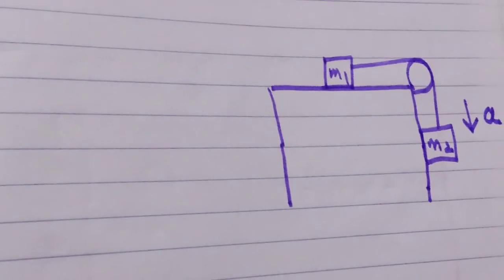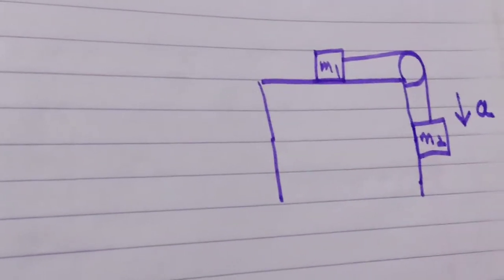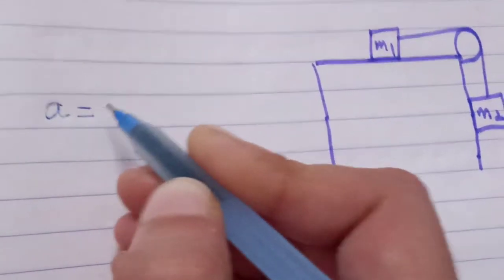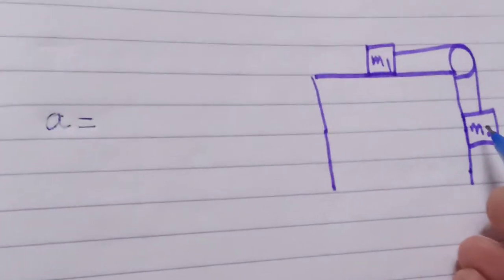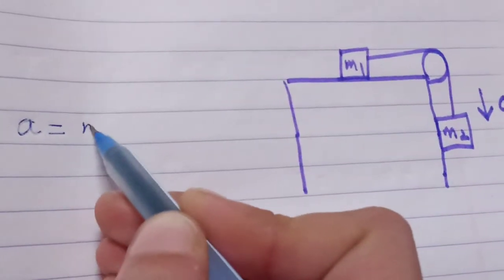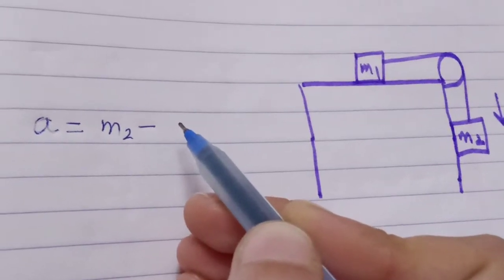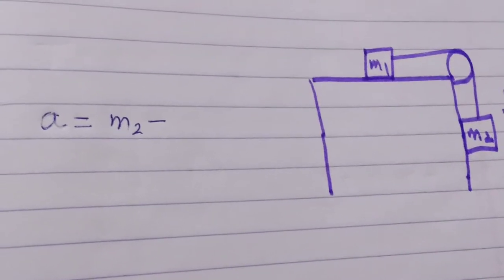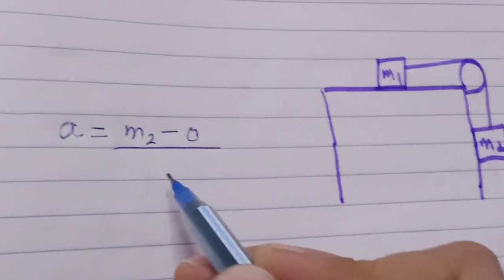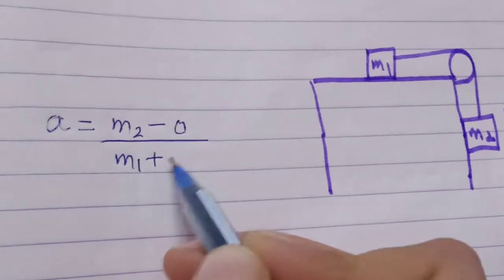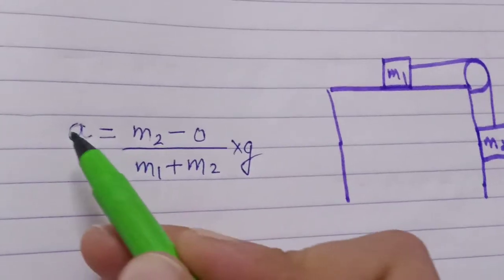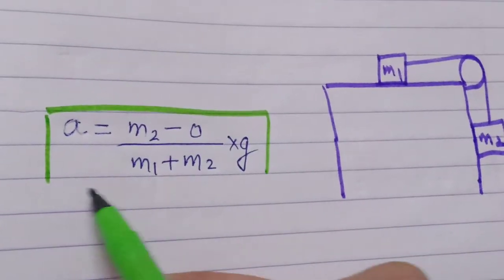For this, a is equal to all the mass moving downward, which means m2, minus all the mass moving upward. There is no mass which is moving upward, so it's zero, divided by total mass m1 plus m2, times g. By the short trick we find like this, and from there we find the acceleration.